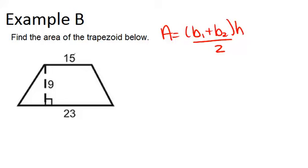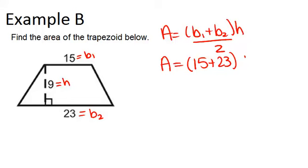In this problem, 15 will be base 1, 23 will be base 2, and the height will be 9. So the area is 15 plus 23, times the height of 9, divided by 2.